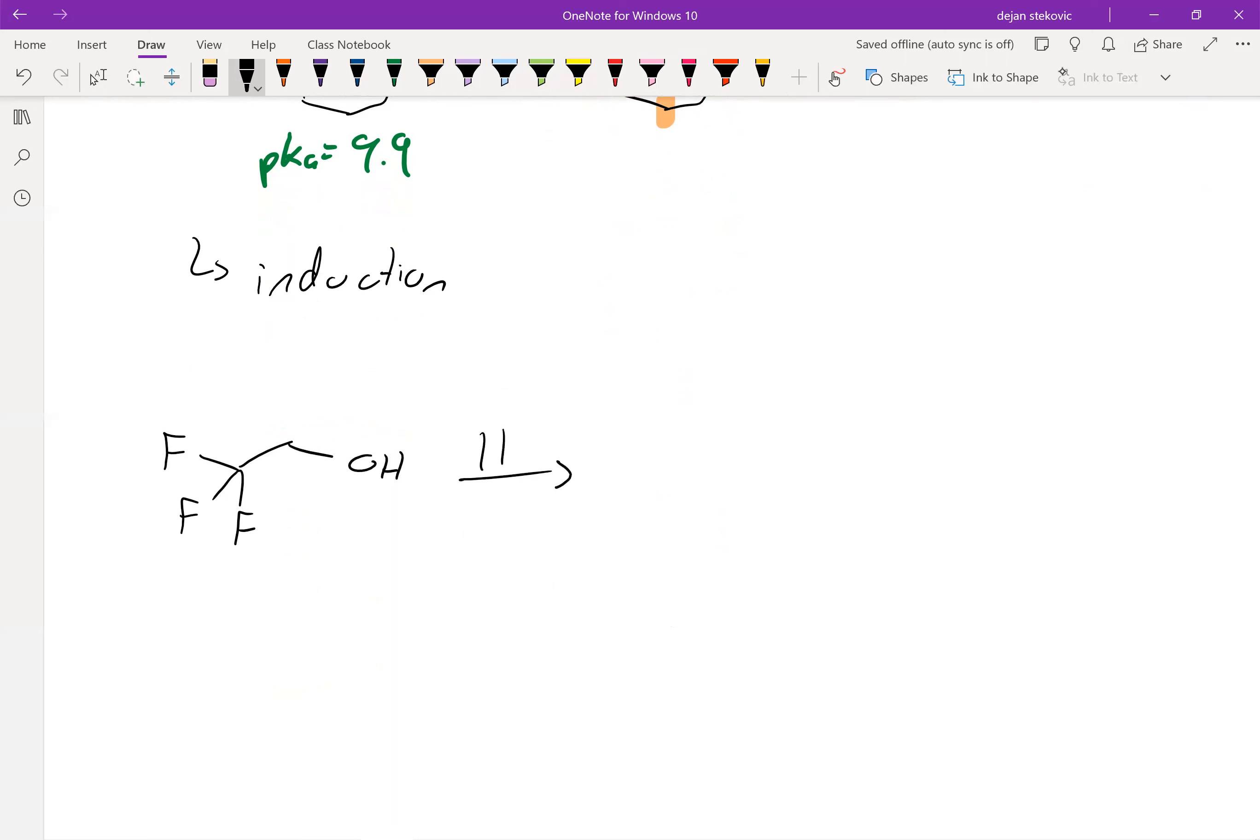If we subtract out this H+, take a look at our conjugate base, we have this negative charge over here. But with these three fluorines, we can create a dipole, where this carbon right here is actually partially positive, because the electronegativity of the fluorines is pulling those electrons away from that carbon.